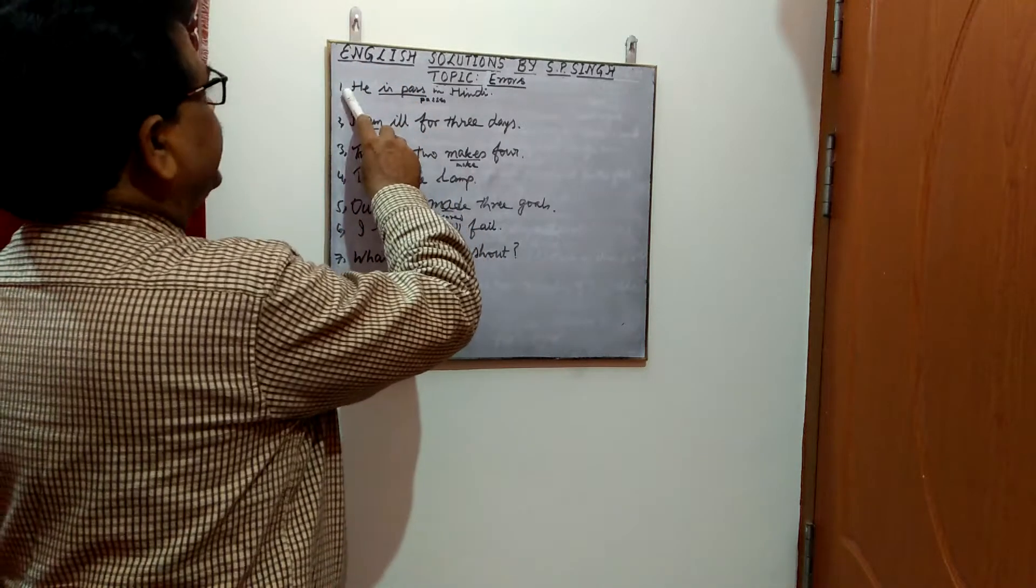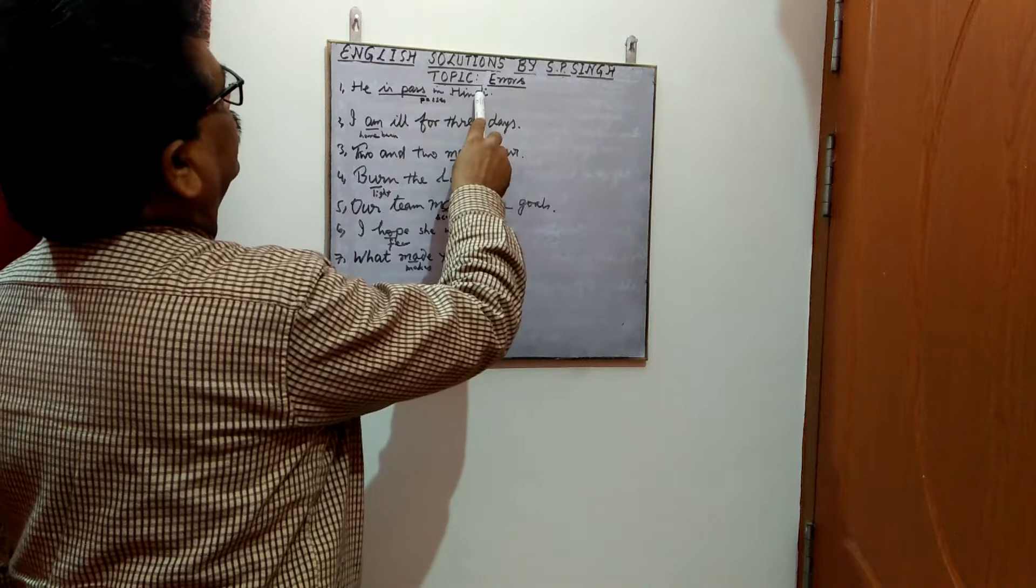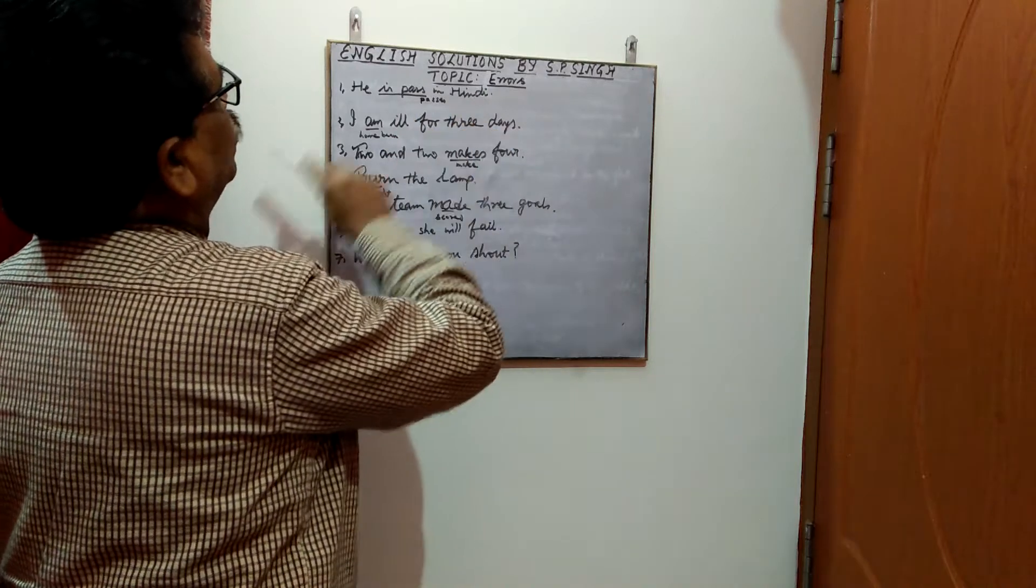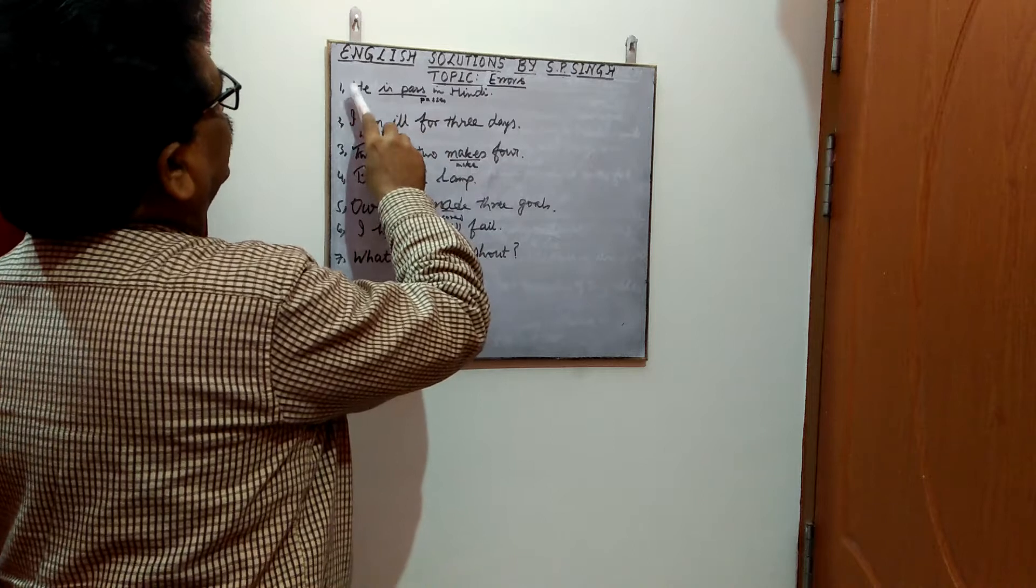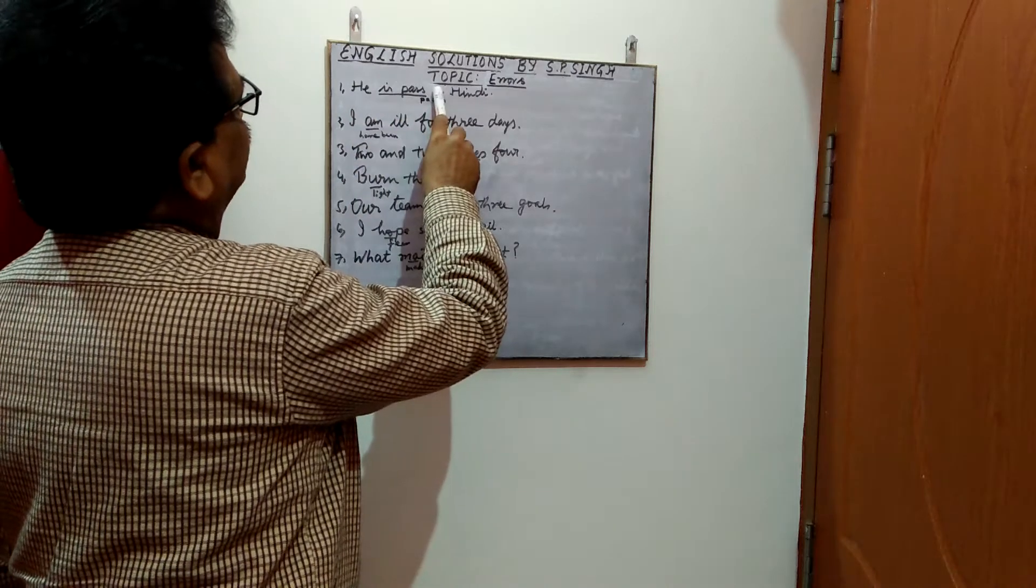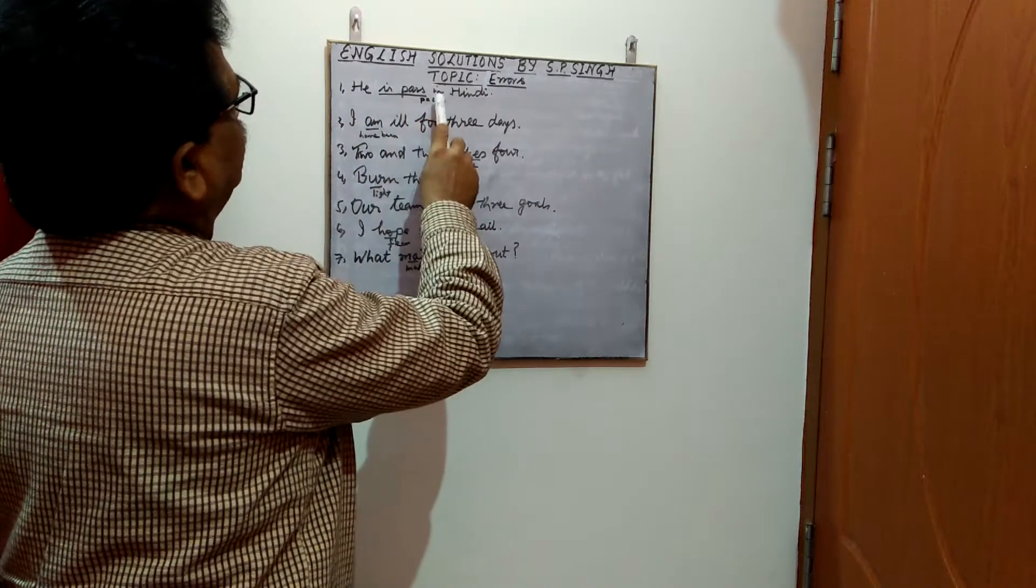First sentence is, he is pass in Hindi. Here you have to find out the error. He is pass is wrong. Here you have to put he passes in Hindi. He is pass is to be replaced by passes.